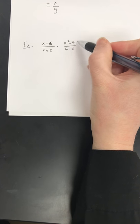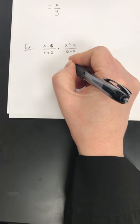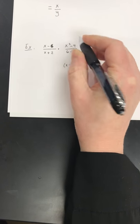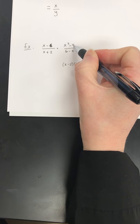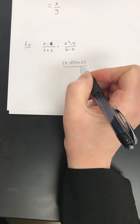However, I do see in the numerator, this is a difference of squares. So I'm going to rewrite this as x minus 2, x plus 2. x squared is a perfect square. 4 is a perfect square. Square root of x squared is x. Square root of 4 is 2, and I put one of each sign. And that is over 6 minus x.